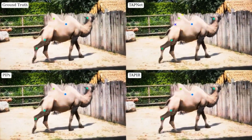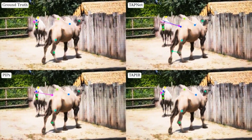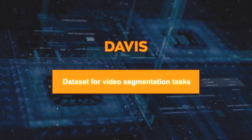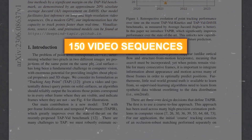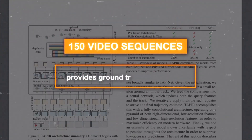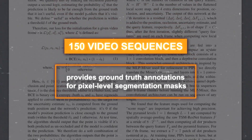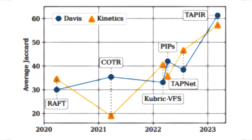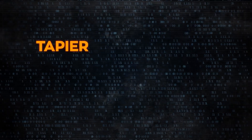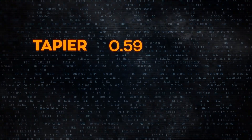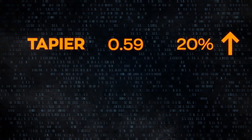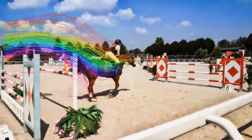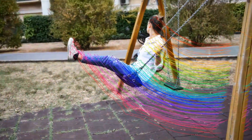TAPER also performed well on the DAVIS benchmark, a dataset for video segmentation tasks containing 150 video sequences with pixel-level segmentation masks. The researchers used TAPER to track 10 points per video on DAVIS and computed the AJ score. TAPER achieved an AJ score of 0.59, again about 20% higher than the second-best method D2NET, which scored 0.39, meaning it tracked points more consistently across different frames than any other method.